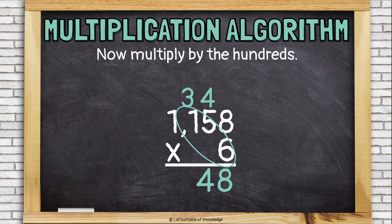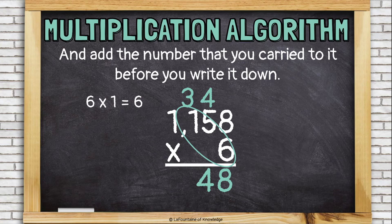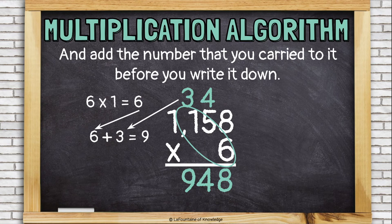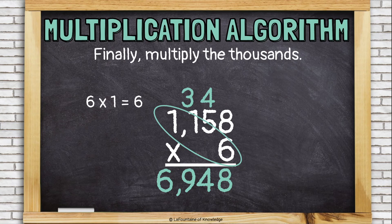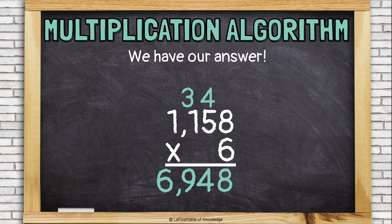Now I'm going to keep going. It's time to multiply by the hundreds. 6 times 1 is 6. But I can't forget to add the 3 to it. So I have 6 plus the 3 that I carried, and that's 9. And that will go in my answer. And we're almost done. I have one more digit to multiply by the thousands. And luckily, it's an easy one. 6 times 1 is 6. So my answer is 6,948.